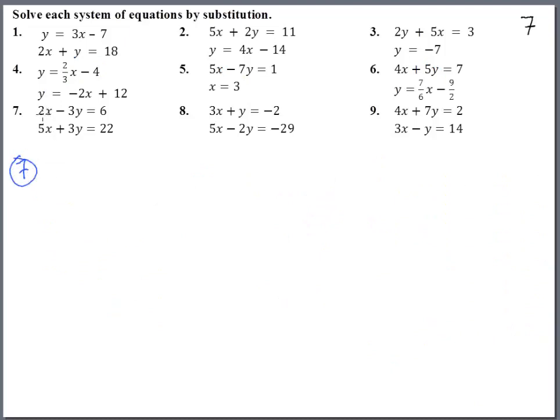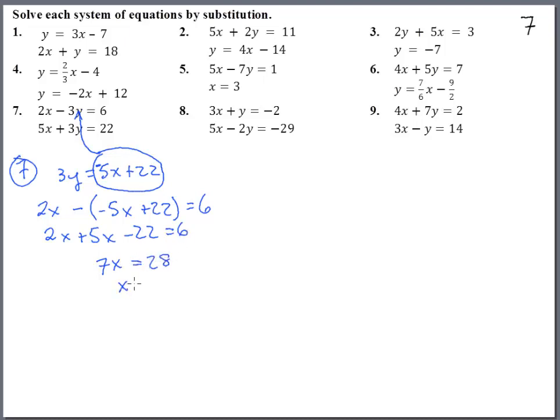Number 7. 2x minus 3y equals 6. 5x plus 3y equals 22. They made this one a little bit tough because we've really got to solve so we can substitute. We do have 3y's in both of them. So I'm going to take this down here and solve for the 3y and subtract 5x from both sides. So we get 3y equals negative 5x plus 22. Now notice that this 3y, that guy can go right up there for that 3y. So we really get 2x minus (negative 5x plus 22). That's our 3y equals 6. That's 2x plus 5x minus 22 equals 6. 7x. Add 22. That's 28. So x equals 4.